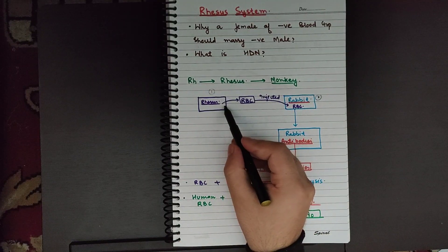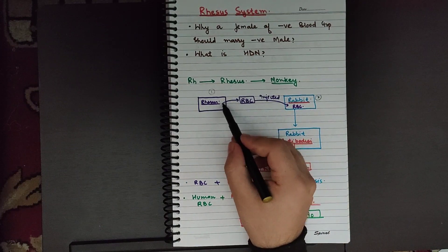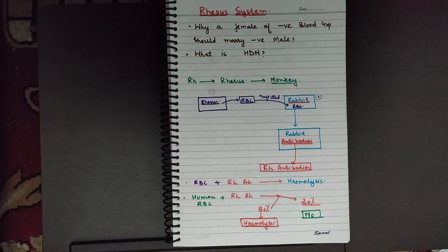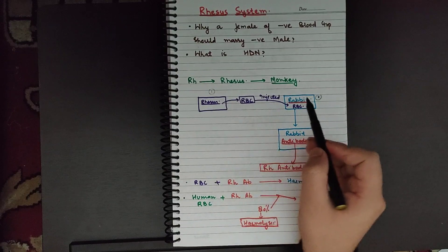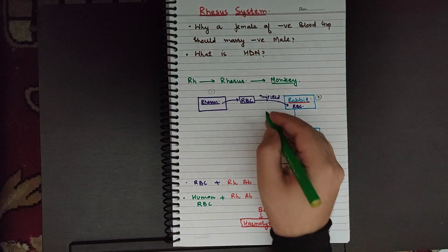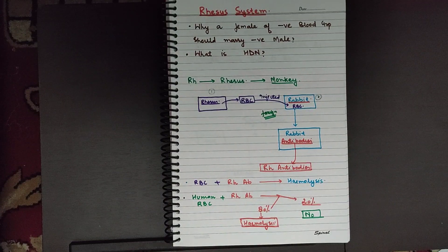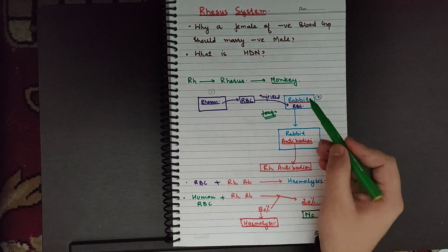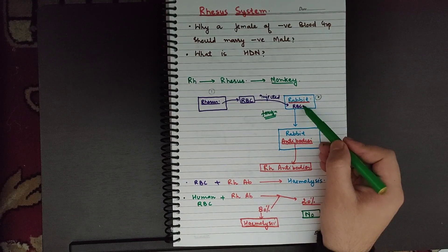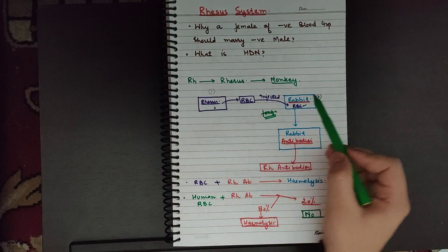If we take the blood of the Rhesus monkey and inject it inside the rabbit — I have taken the RBCs or blood of the Rhesus monkey and injected it inside the rabbit — these RBCs will act as a foreign substance or foreign antigen for the rabbit. The immune system of the rabbit is going to produce antibodies against these RBCs. This is a very important and basic property of the immune system.